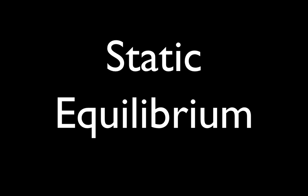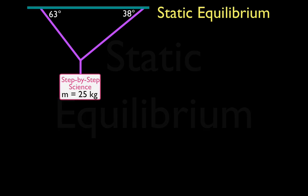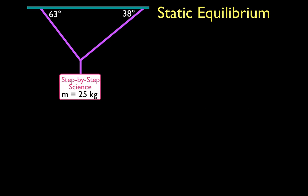In today's video we're going to go over a problem involving static equilibrium. We have a step-by-step sign which has a mass of 25 kilograms. It is supported by two cables. This cable makes an angle of 63 degrees with the roof, and this cable makes an angle of 38 degrees with the roof. We want to figure out the tension T1 in cable 1, and the tension force T2 in the other cable.